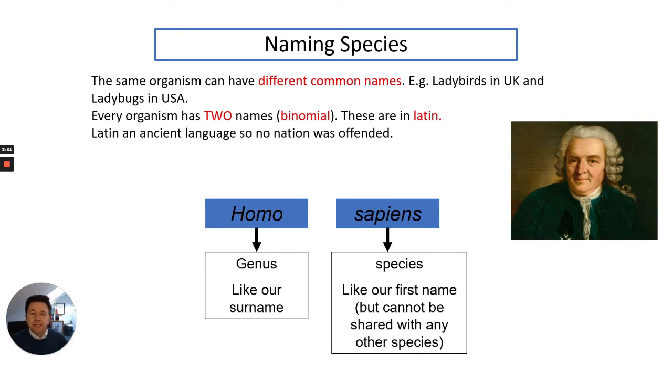So how do you name species? You use what we call a binomial naming system. The same organism can have different common names wherever you go around the world. For example, in the UK we have ladybirds whereas in the US they are ladybugs, so we have to give them proper scientific names so that scientists know that they're talking about different or similar creatures. Every organism has two names in Latin.